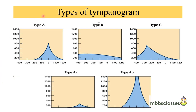When a report is produced, tympanograms are classified into types: Type A, Type B, and Type C. Type A has two variations — Type AS and Type AD. Type A is a normal tympanogram; Type B is a flatter curve; Type C shows compliance peak shifted toward negative pressure; Type AS has normal pressure but low compliance; and Type AD has compliance exceeding the equipment's upper limit.